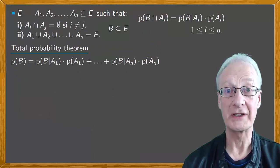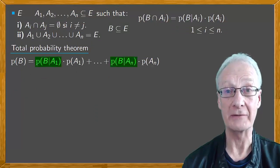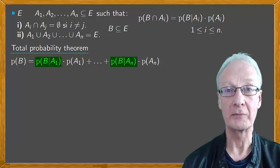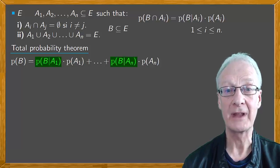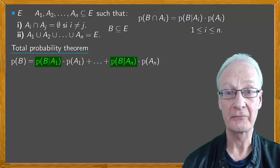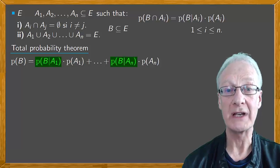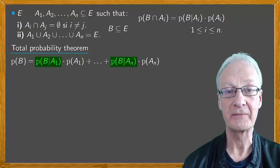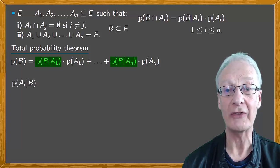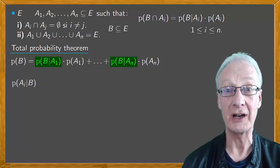Notice that in the Total Probability Theorem, we have some conditional probabilities — the probabilities of B conditional on each of the Ai. In Bayes' Theorem, we will obtain the conditional probabilities in reverse; that is, the probabilities of Ai conditional on B for each i.